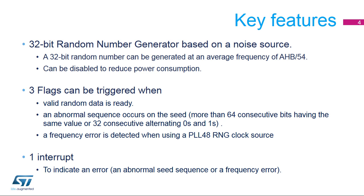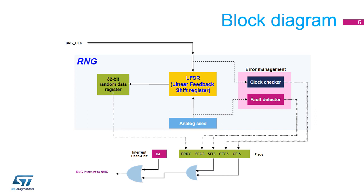An interrupt source can also be enabled to indicate an abnormal seed sequence or frequency error. This simplified block diagram of the RNG shows its basic functional and control modules.